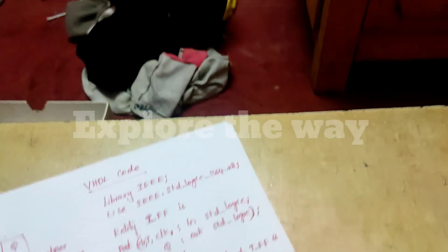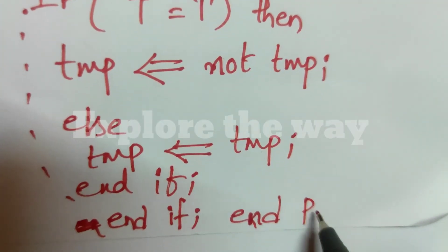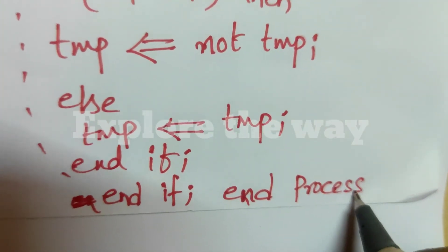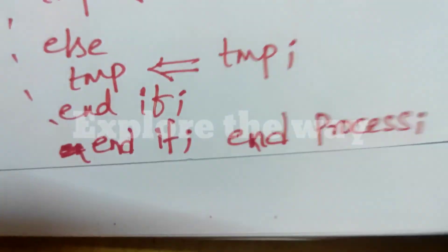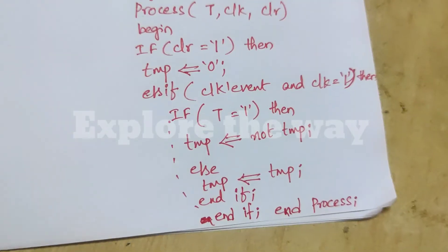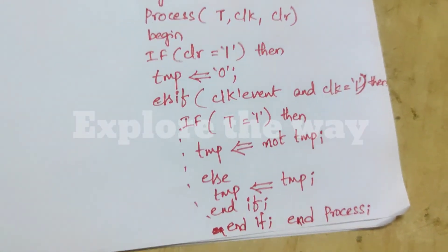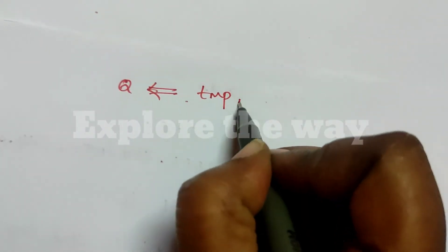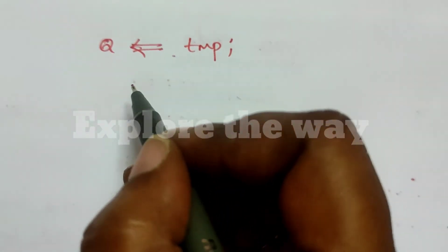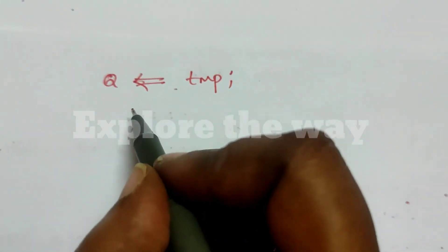After the process statement is ended, the temporary value in the signal is assigned to actual output. Q is assigned temp.